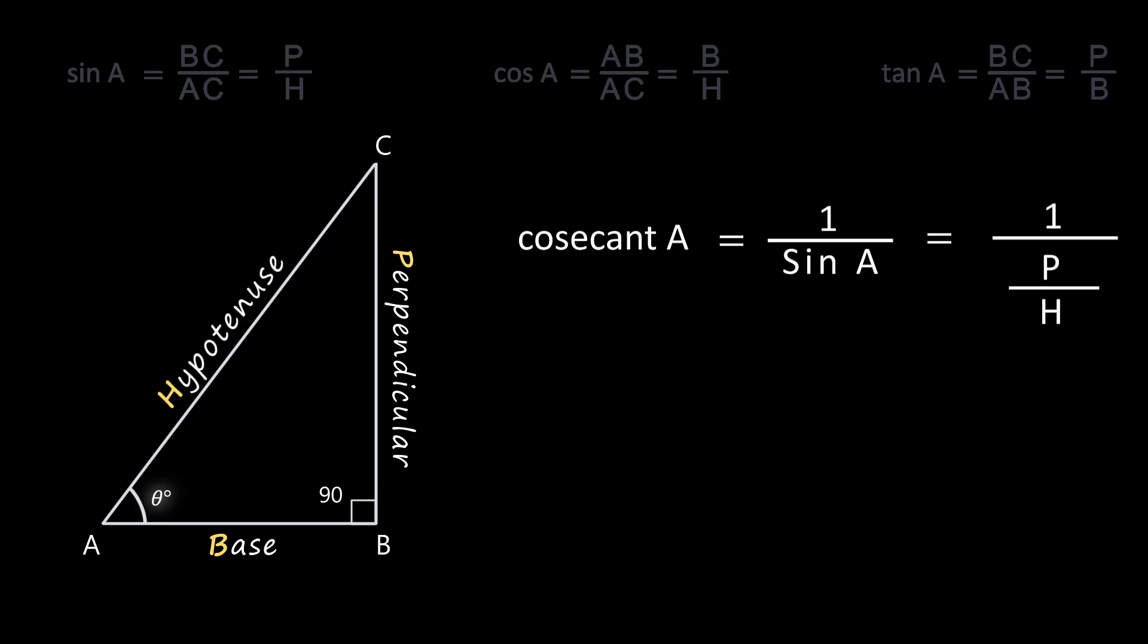Cosec A is the reciprocal of sin A. We had derived the ratio of sin A to be perpendicular by hypotenuse and we had denoted it as P by H. Now cosec A will be the reciprocal of sin A so we get H by P or you can write cosec A is equal to AC by BC.